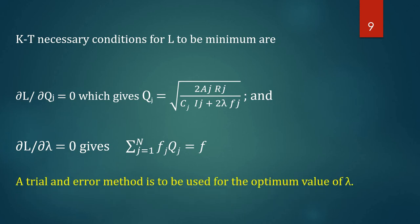The question is how to get the value of λ. We use a trial-and-error method to find the optimum value of λ. One clue: Qj and λ are inversely related. If Qj values are more than required, we decrease λ, and vice versa. We will see this in the example.